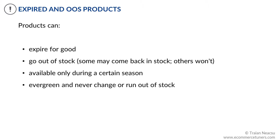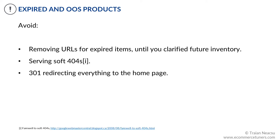The way you handle product life cycles from an SEO perspective depends on the future inventory availability. There is no definitive correct way to handle product life cycles, but generally try to avoid removing out-of-stock items' URLs until you know if the product comes back in stock or not.